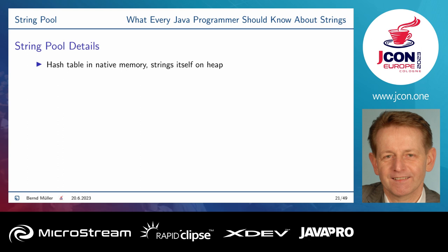How is this pool implemented? It's implemented in C/C++, inside the JVM — not in Java. It's not a HashMap as we know it. The strings themselves reside on the heap, but the table is implemented in native memory. Hash table bucket sizes should be prime. Before Java 7, the bucket size was 1,009. Afterwards it became 60,013. Since Java 11 it's 65,563 — which is not prime.